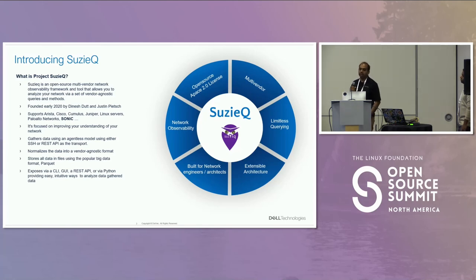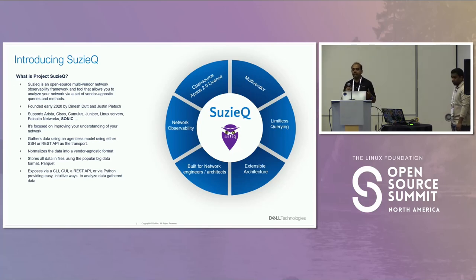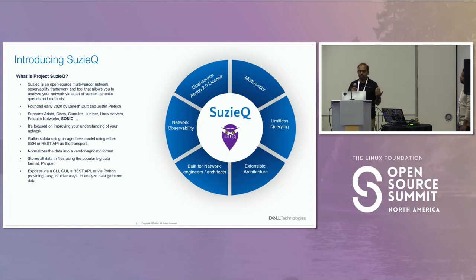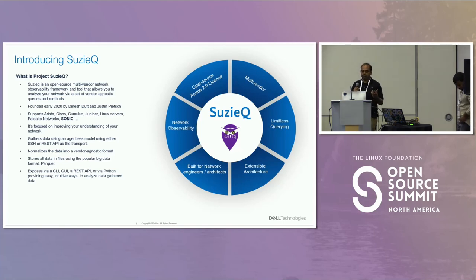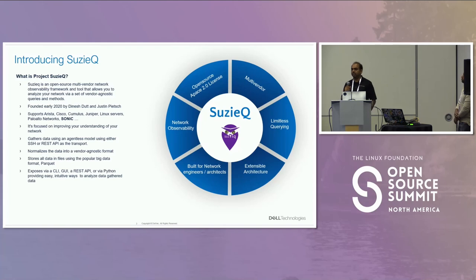The story of SuzyQ began in early 2020 when it was founded by Dinesh and Justin, two experts who foresaw the need for a better way to observe and analyze networks. The main goal of SuzyQ is to improve understanding of your network. It does that by gathering data using an agentless approach — meaning you don't need specific installations on the NOS itself. You can collect all the information in abstracted form, with standardized data formats that make it easy to compare and analyze.